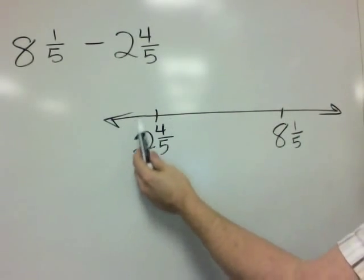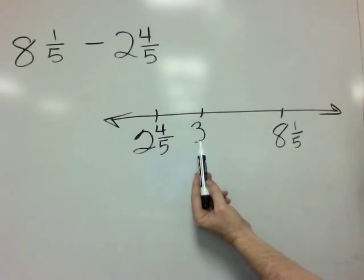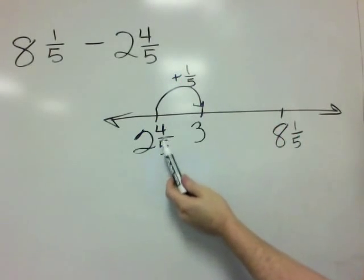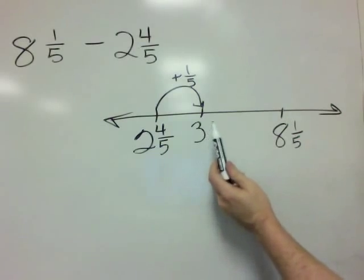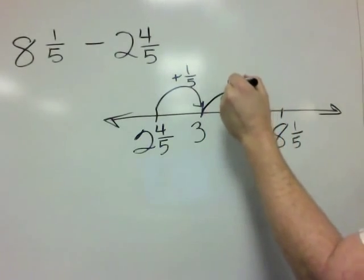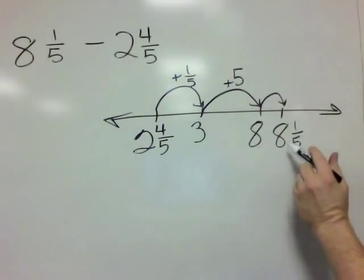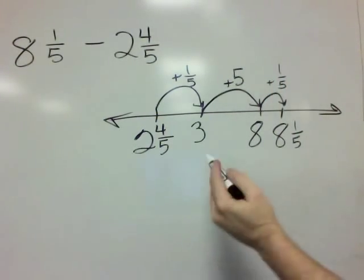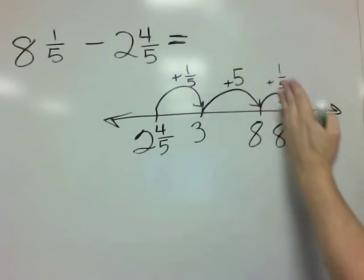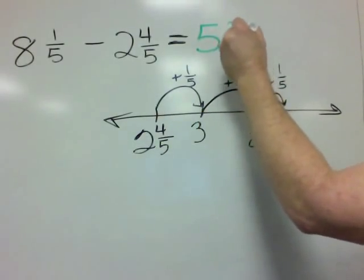I can see that 2 and 4 fifths is a little bit less than 3. So what do I have to add to get it up to 3? I'm going to add 1 fifth — 2 and 4 fifths plus 1 fifth gives us 3. Then from 3 up to 8, I add 5. Then to go from 8 to 8 and 1 fifth, I have to add another 1 fifth. So all told, what I have to add to 2 and 4 fifths to reach 8 and 1 fifth is 5 and 2 fifths.